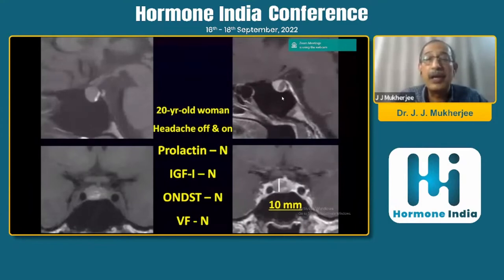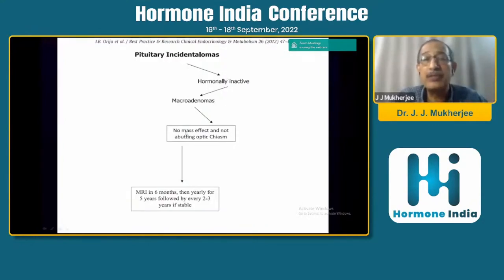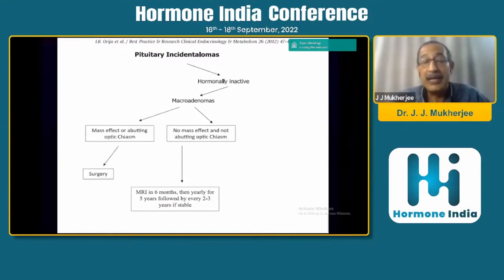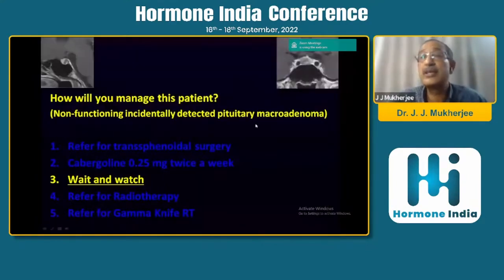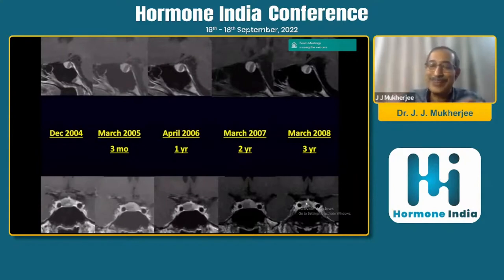Take this young lady, 20 years old, with headache off and on. It looks like a cystic lesion but on coronal scan it's not cystic — it's almost 10 mm in size, so it's a macroadenoma. Hormonal workup is again negative — a non-functioning incidentally detected macroadenoma. If it is hormonally inactive with no mass effect and not abutting the optic chiasm, again don't send for surgery. Follow these patients up — I follow at six months, then yearly for five years. If the mass was abutting or compressing the optic chiasm, you need to send for surgery. We chose to wait and watch, and over three years this sizable lesion actually shrunk. It would have been really unfortunate if she had been sent for surgery and ended up with some hormonal deficit.